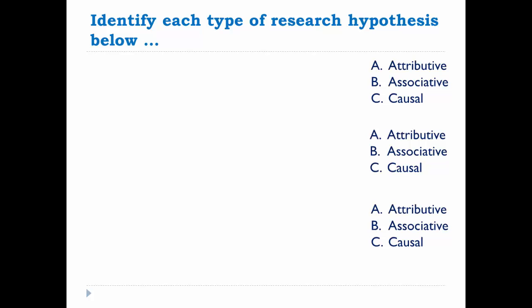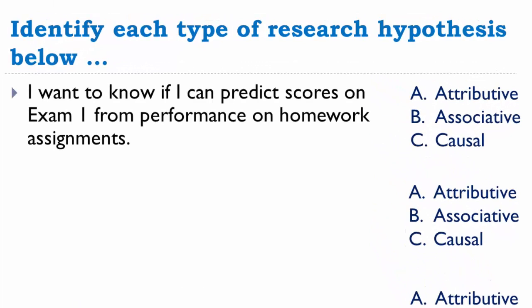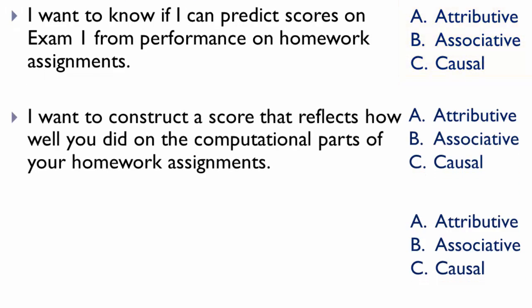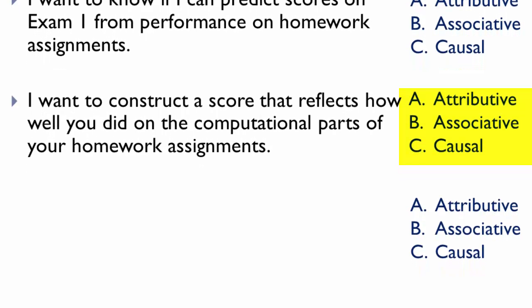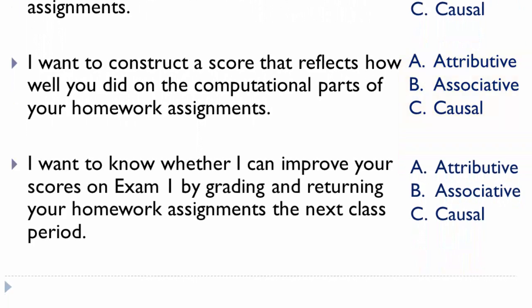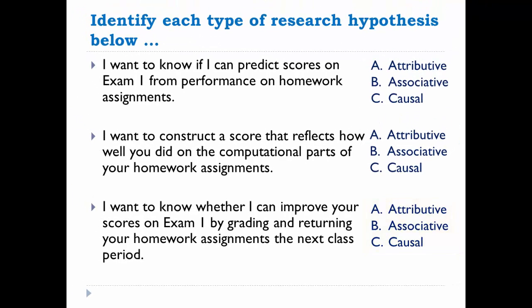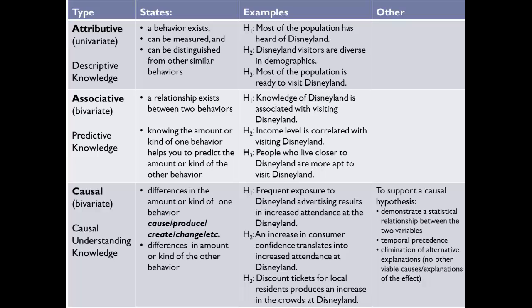Let's see if you can identify each type of research hypothesis. For these examples, we'll move away from Disneyland and consider homework and exam scores. First: can I predict scores on Exam 1 from performance on homework assignments — how many practice problems students completed? Is that attributive, associative, or causal? How about: I want to construct a score that reflects how well you did on the computational parts of your homework assignments? And: can I improve your scores on Exam 1 by grading and returning homework assignments the next class period? This is a one-page summary of the different types of hypotheses and the examples given.